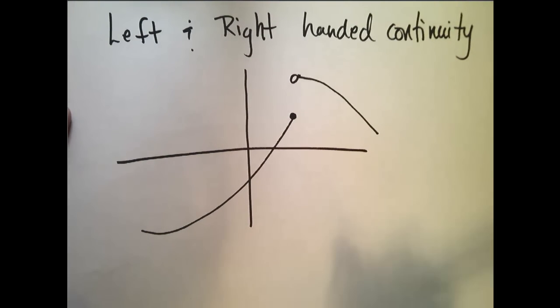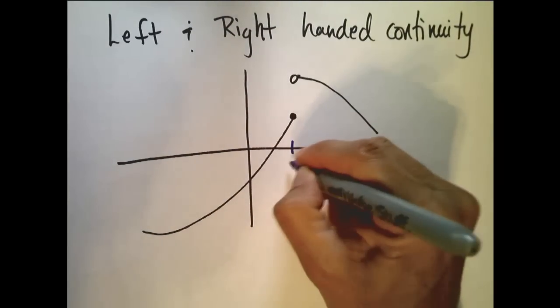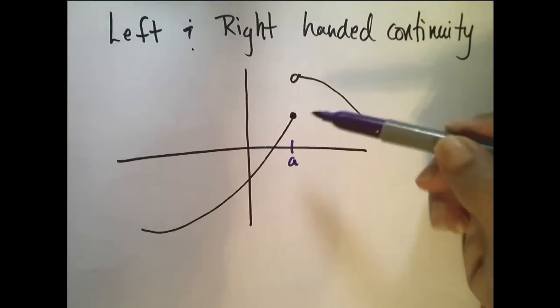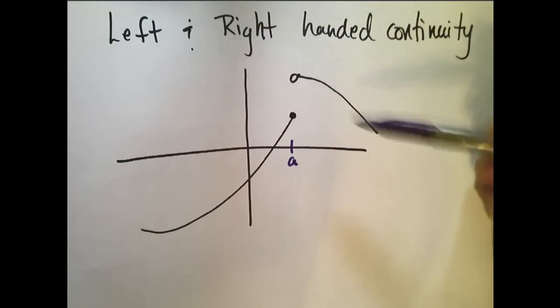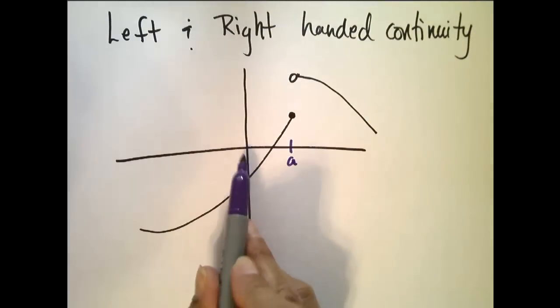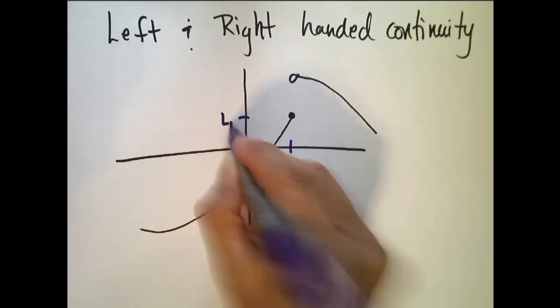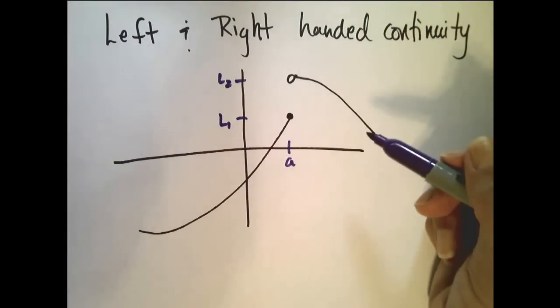The first is we want to be able to talk about left and right handed continuity. Okay, so let's place a right here. And if I asked you, is this function continuous at a, you would say no. It would fail both two and three. The limit as x approaches a of f of x doesn't exist because the left and the right handed limits don't match. So we know this is not continuous at a.